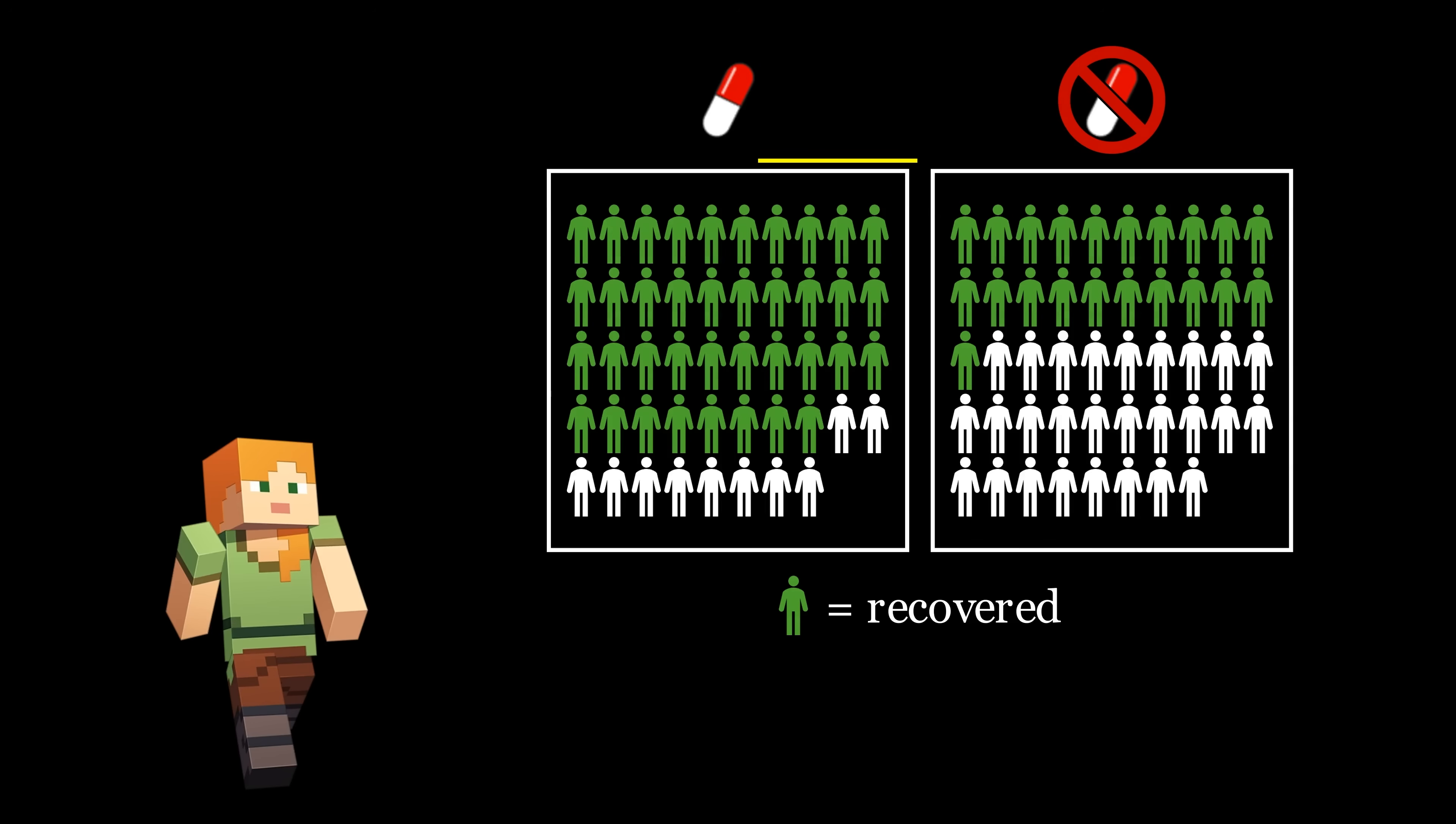If we observe that more people recovered in the treatment group, we can't automatically assume that the drug worked. It may be that the treatment group simply got lucky, like our Minecraft playing friend claims. Once again, the p-value is capturing just how lucky the treatment group would have to be in this case, if the drug actually did not work.